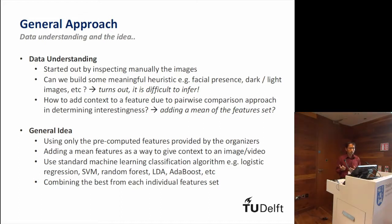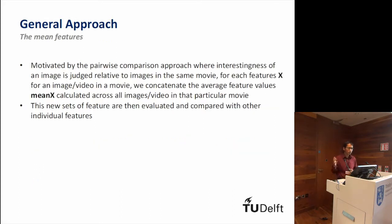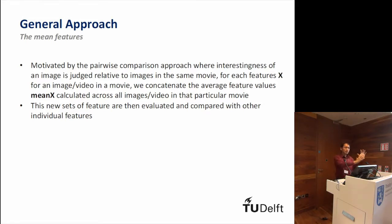In the next slide, I'll explain one additional derived feature that we used, which turns out to be quite helpful in improving the MAP value. The general idea is using only the precomputed features, and we add one more derived feature called the mean features, then apply a standard machine learning pipeline, and finally use late fusion. The mean features are calculated based on the average of all the images in a particular movie — for example, local binary pattern, which consists of 59 dimensions. By adding these mean features, we hope to inform the classifier about what kind of movie a particular image belongs to.